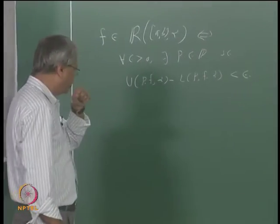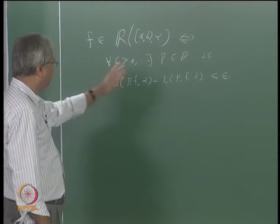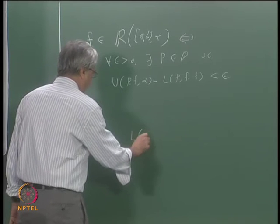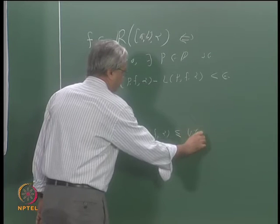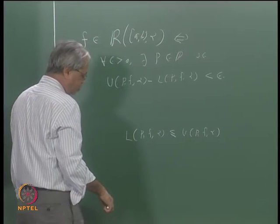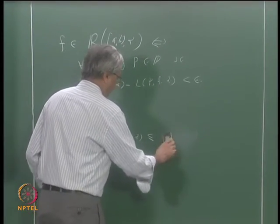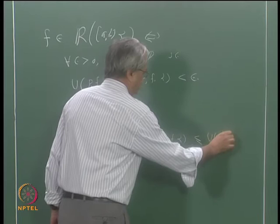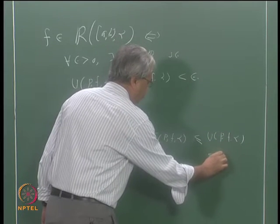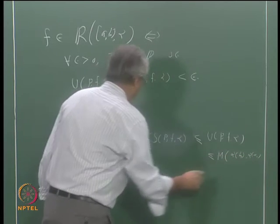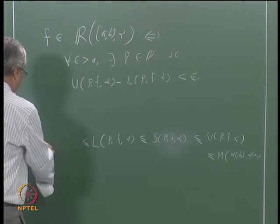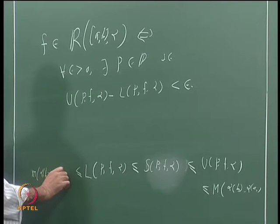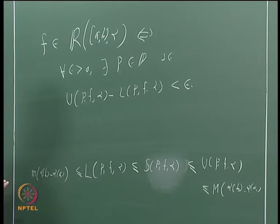For continuous functions we can also notice one more thing. We have noted that for any partition: L(P,f,α) ≤ U(P,f,α), and any Riemann-Stieltjes sum lies between L(P,f,α) and U(P,f,α). Furthermore, U(P,f,α) ≤ M·(α(b) − α(a)) and L(P,f,α) ≥ m·(α(b) − α(a)), where M = sup f(x) and m = inf f(x) over [a,b].